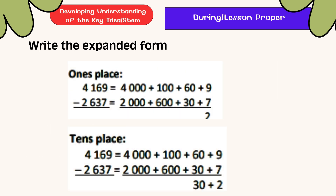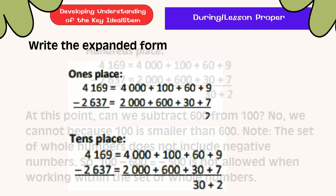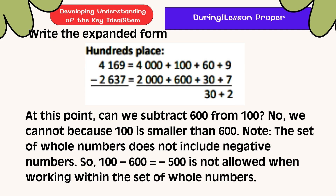We will subtract starting at the one's place. 9 minus 7 is equal to 2. Then the tens place: 60 minus 30 is 30. Next, the hundreds place: 100 minus 600. Can we subtract 600 from 100? No, we cannot, because 100 is smaller than 600. Note: the set of whole numbers does not include negative numbers. So 100 minus 600 equals negative 500, which is not allowed when working within the set of whole numbers.